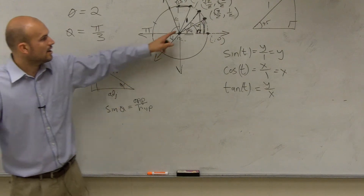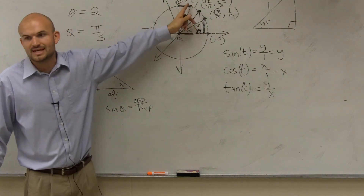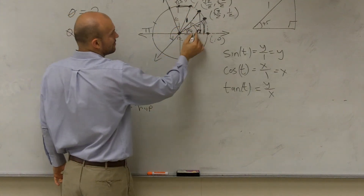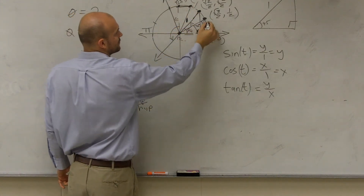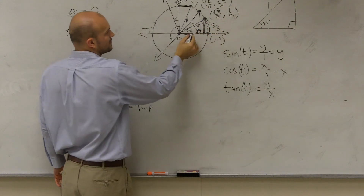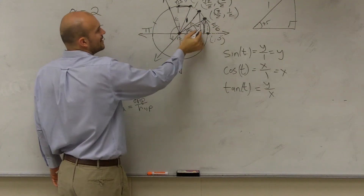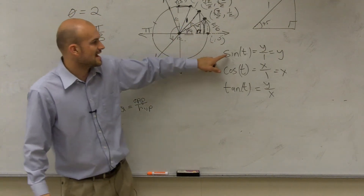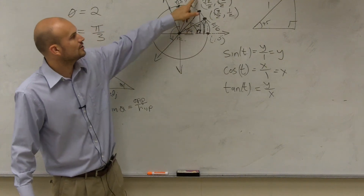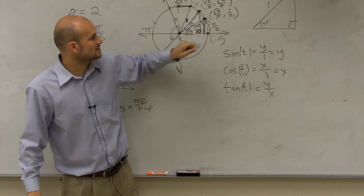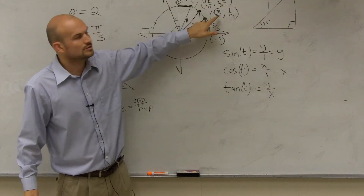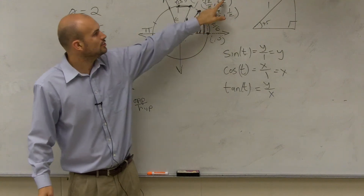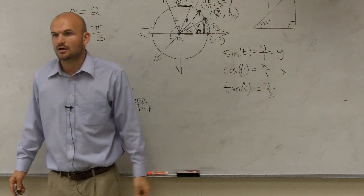So what we did then is we said all these points relate to an angle. This angle from here to here is pi over 6, from here to here is pi over 4, and from here to here is pi over 3. So if I said I wanted to find the sine of pi over 3, you just look at the y coordinate. If I said the cosine of pi over 6, you just look at the x coordinate. And if I said the tangent of pi over 4, you put y over x for this one, which would have been one.